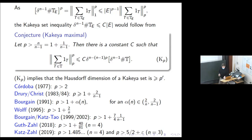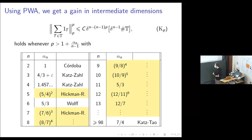With Jonathan Hickman, we used this polynomial Wolf axiom theorem to get an improvement in intermediate dimensions. We rewrote Guth's induction argument as a recursive algorithm in order to feed in this polynomial Wolf axiom information. Without the polynomial Wolf axiom, you don't get improvement within the Kakeya context. But now that we had this, we could proceed. It goes by polynomial partitioning.